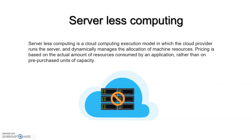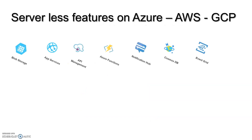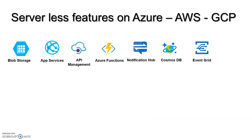Let us have a look at a few serverless features of GCP, AWS, and Azure. A few serverless features of Azure are Blob Storage, App Services, API Management, and more.